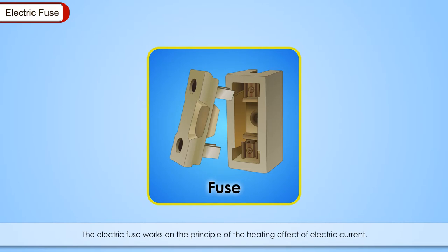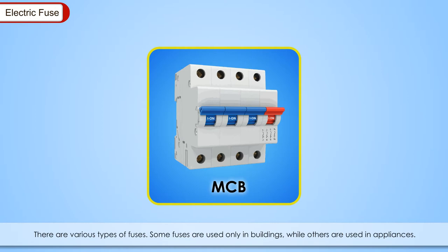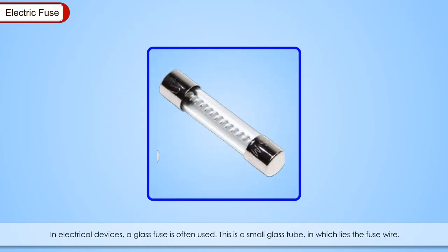Electric fuse: The electric fuse works on the principle of the heating effect of electric current. It is a safety device to prevent damage to an electrical circuit when excessive current flows through it. Fuses are always connected in series with the components to be protected from overcurrent. Electric fuse has body made of ceramic and two points for attaching the fuse wire. As the electric current increases beyond the limit, the wire in the electric fuse melts and breaks off. The fuse is then said to have blown off. The circuit is broken and current stops flowing through it. Thus, a fuse prevents fires. There are various types of fuses. Some fuses are used only in buildings while others are used in appliances. In electrical devices, a glass fuse is often used. This is a small glass tube in which lies the fuse wire.